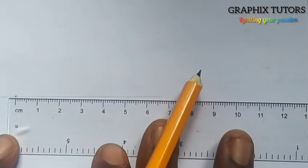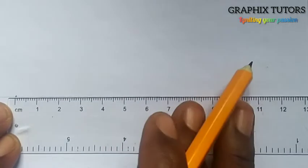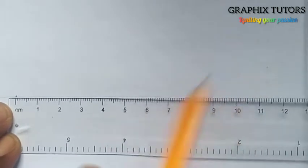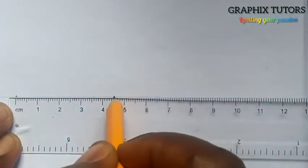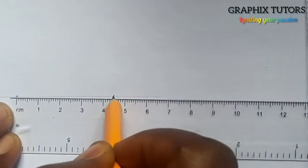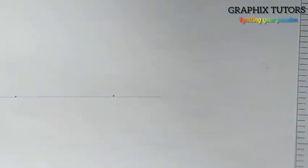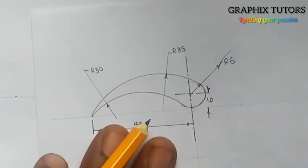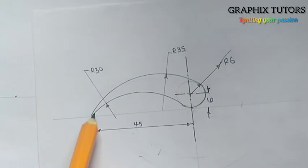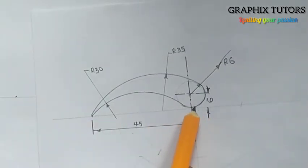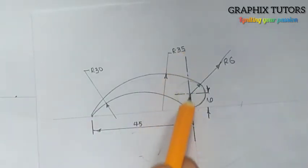From here I'll measure to this point, which will be 45. So from here to here is 45. At this end of 45, I will rule a straight line that will bisect this horizontal line.